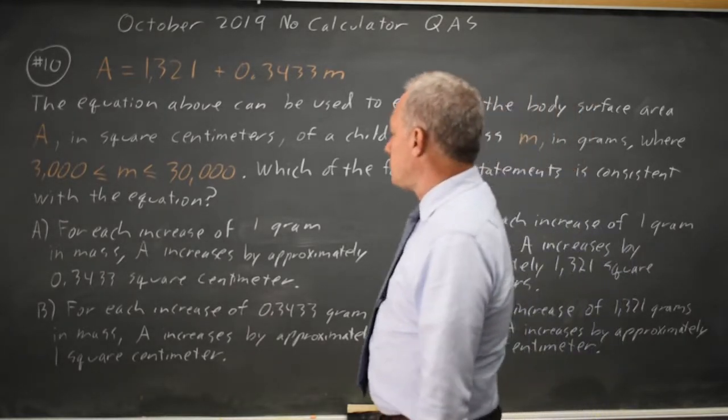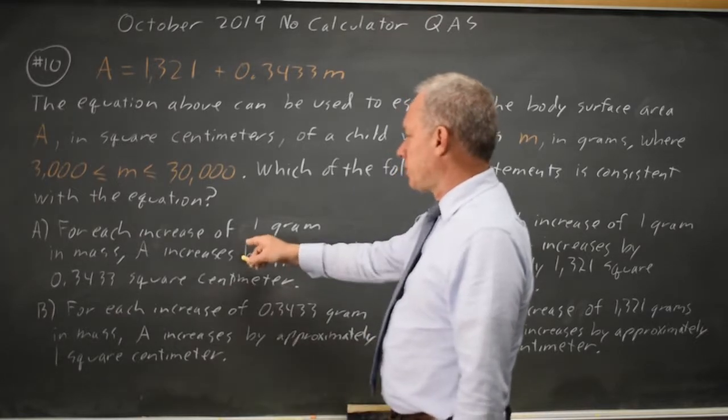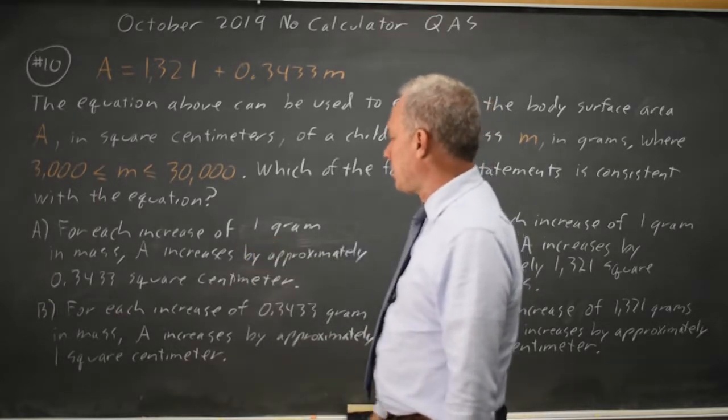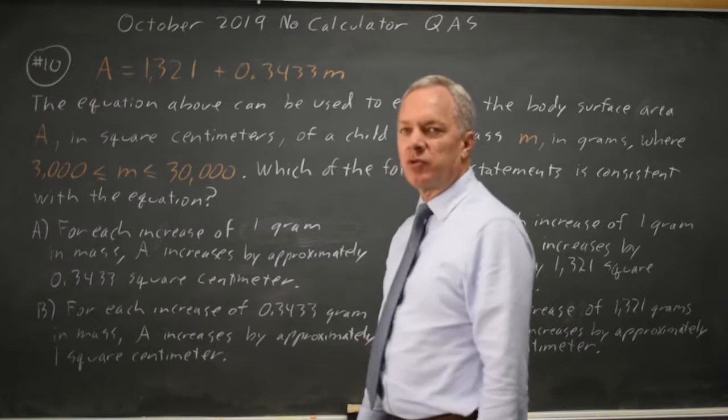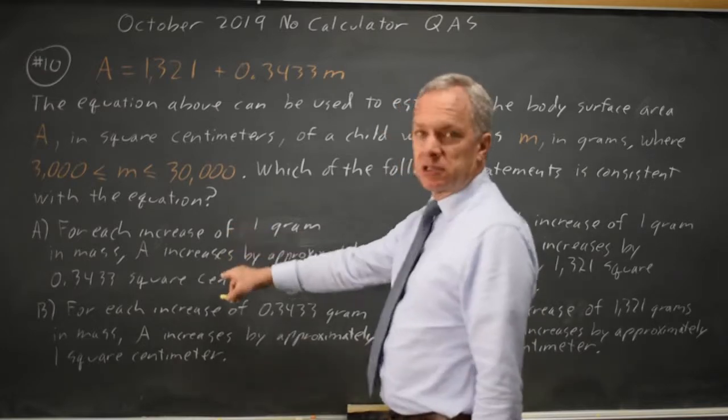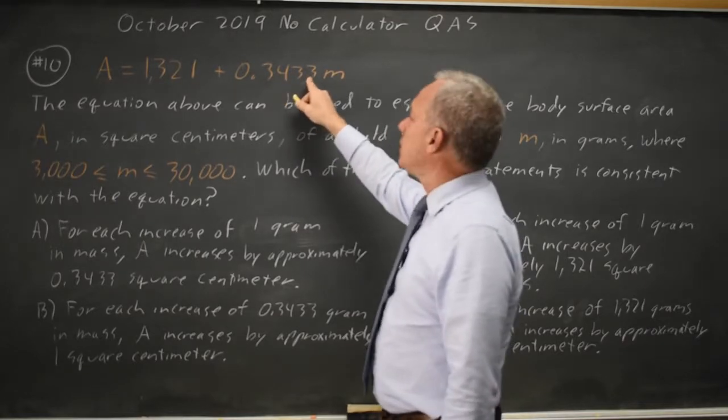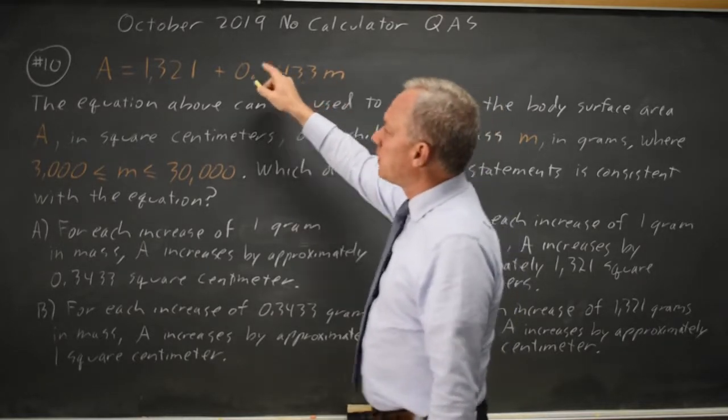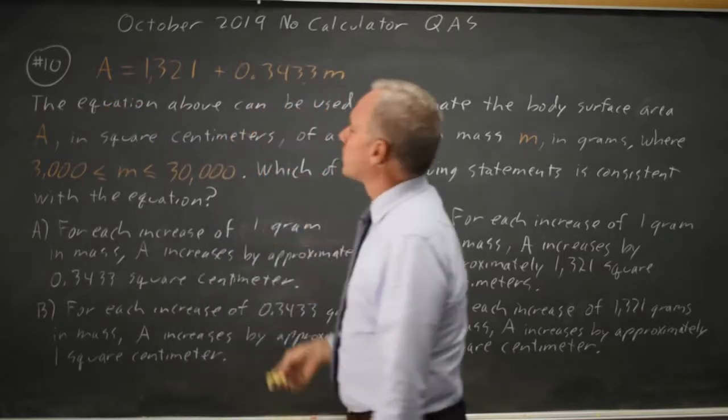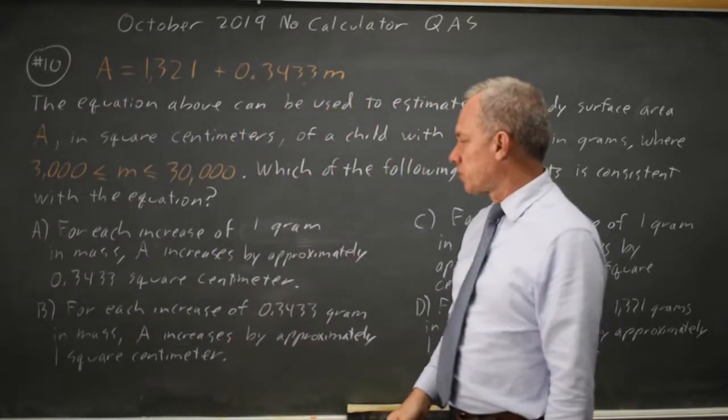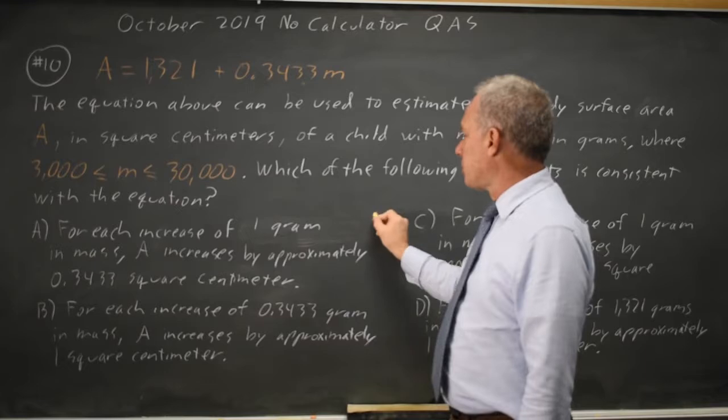Our choices are for each increase of 1 gram in mass, A increases by approximately 0.3433. This sounds like a slope, and 0.3433 is the slope, and when M goes up by 1, A goes up by 0.3433 times 1, which is 0.3433, so that would be correct.